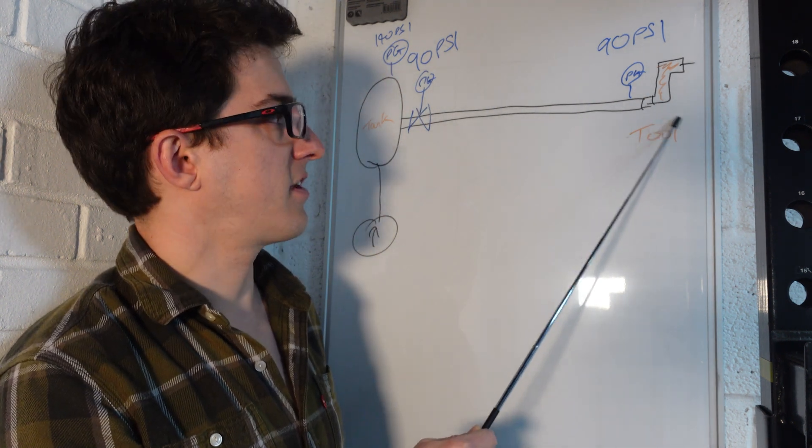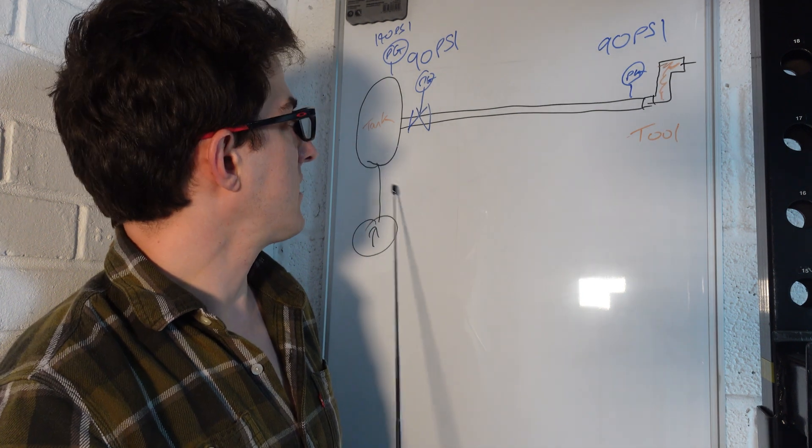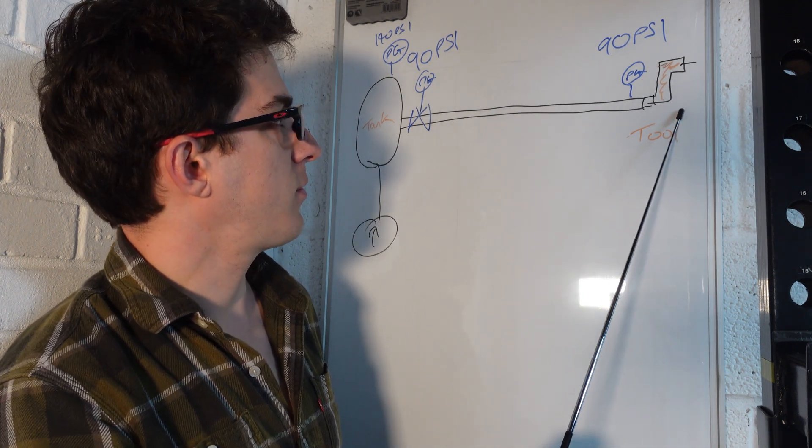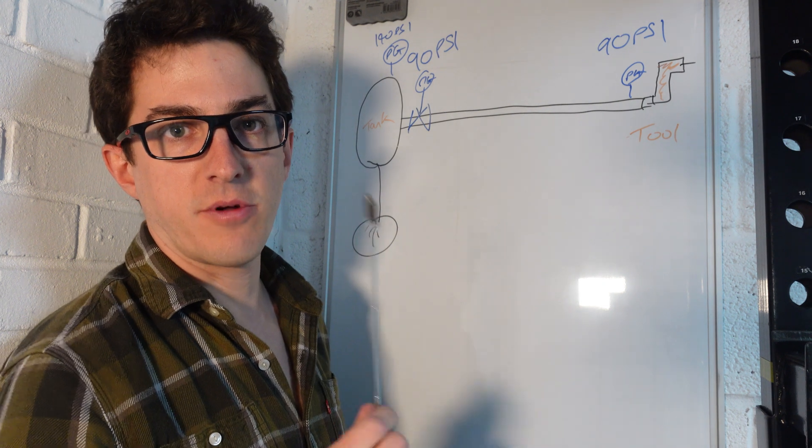Once you turn the tool on, all of a sudden you're going to essentially be opening up this end and causing compressed air to flow through this pipework. This pressure here is going to drop and there's a couple of reasons for that.